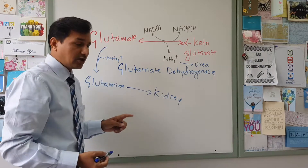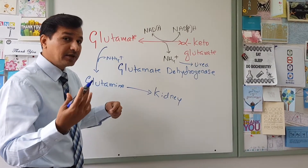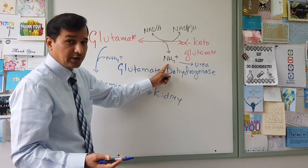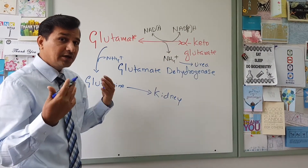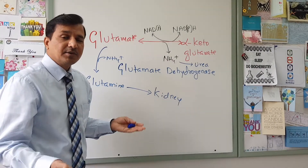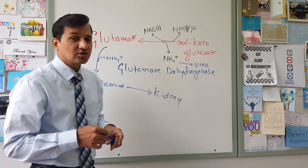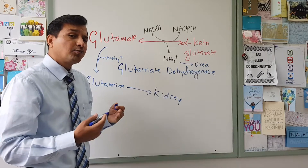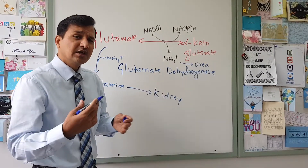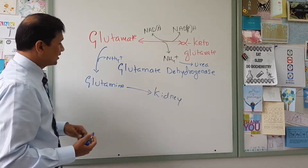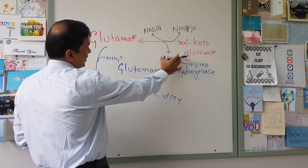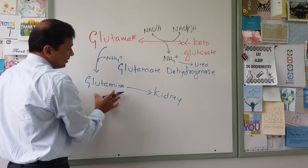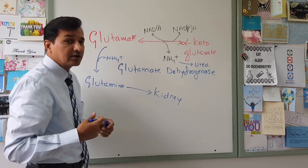In the kidney, glutamine is broken down into glutamate by glutaminase, and glutamate is further broken down into alpha-ketoglutarate with release of ammonium ion. The ammonium ions released in the kidney are filtered into the urine through ammonium salt formation in the renal tubules, removing excess protons. This is how excess ammonium ions from the liver are exported as glutamine and ultimately excreted in the urine.